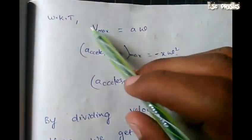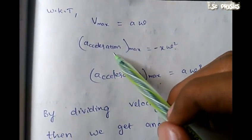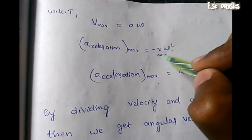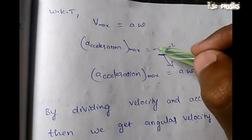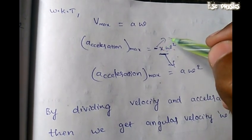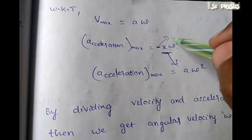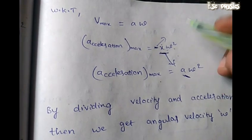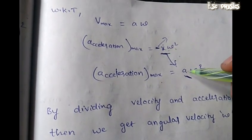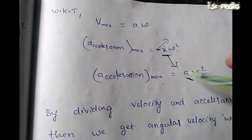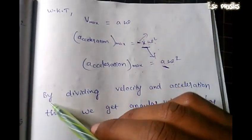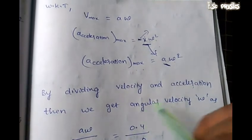Given: maximum velocity V maximum equals 0.4 meter per second, maximum acceleration equals 0.8 meter per second squared. We know that V maximum equals A omega, and the acceleration formula maximum is A omega squared. By dividing acceleration by velocity we can get the angular velocity omega.